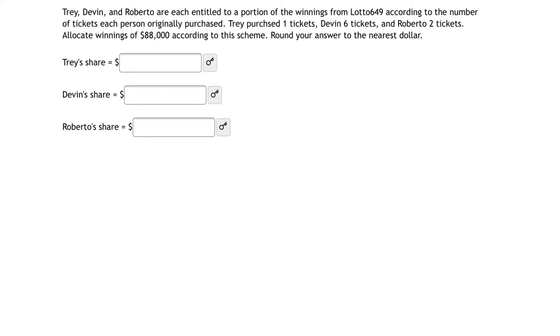Trey, Devin, and Roberto are each entitled to a portion of the winnings from Lotto 649 according to the number of tickets each person originally purchased. Trey purchased one ticket, Devin six tickets, and Roberto two tickets. Allocate winnings of $88,000 according to this scheme and round your answer to the nearest dollar.